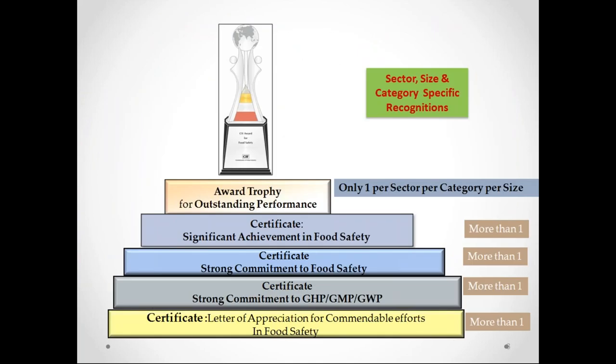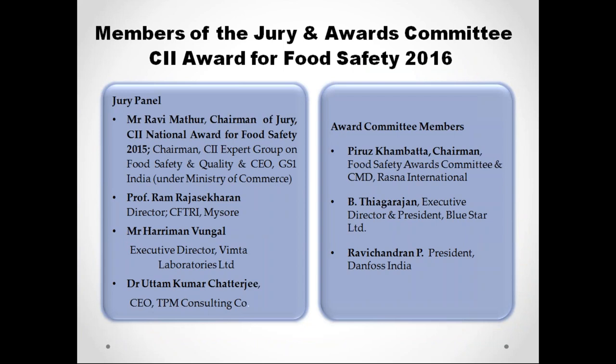The levels of the award remain the same. The award trophy is for outstanding performance — one per sector, per category, per size. The certificates are for significant achievement, strong commitment to GHP, GMP, and GWP, as well as the letter of appreciation. These can be awarded to more than one applicant.